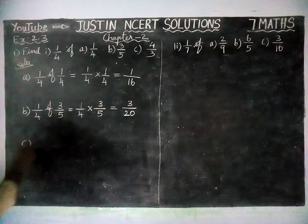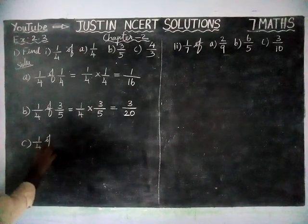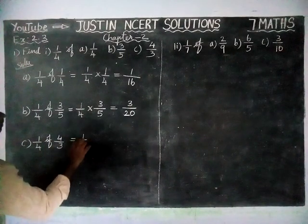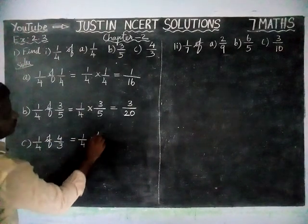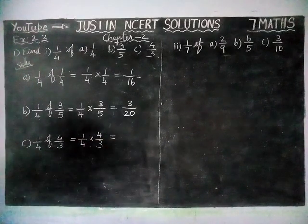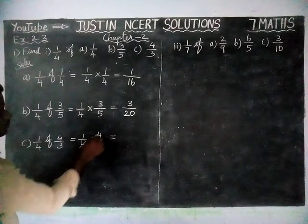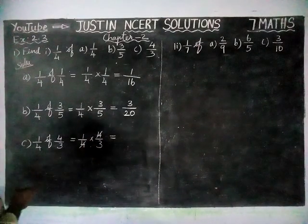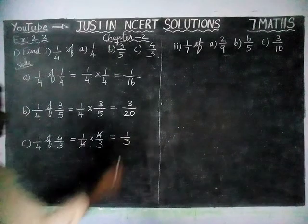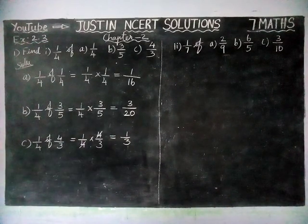And next, option C: 1/4 of 4/3 is equal to 1/4 into 4/3. Here, if it is possible to simplify, we can simplify. We have the number 4 in numerator and denominator — 4 and 4 get cancelled. Remaining is 1 divided by 3. So, 1/4 of 4/3 is equal to 1/3.